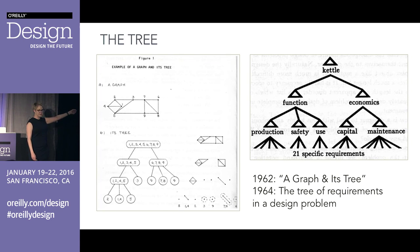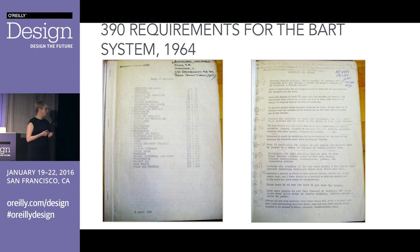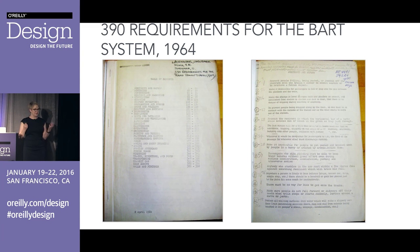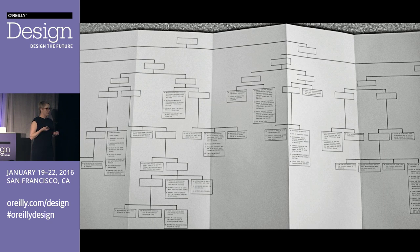You'd see a set of specific requirements — like the design of a tea kettle — broken down and chunked into logical groups, so the designer would know where to focus attention. He also worked on the design of the BART system — 390 requirements before he and the civil engineer were fired; they didn't find this a useful working method. The resulting tree diagram will look familiar to anyone who's done website information architecture. He later throws that away and starts talking about semi-lattices. I think what he was actually doing was social network analysis pegged to architecture.